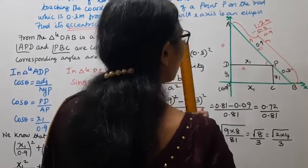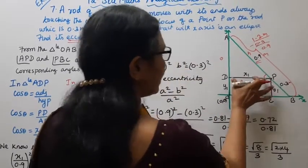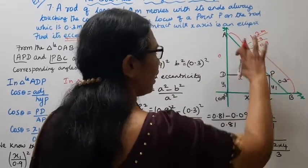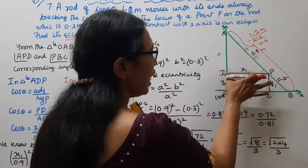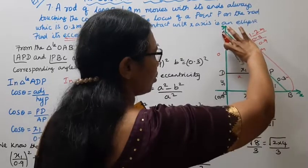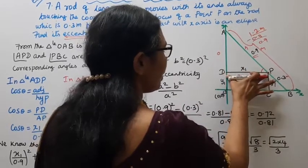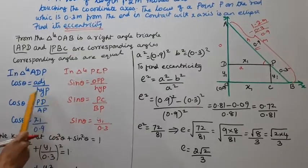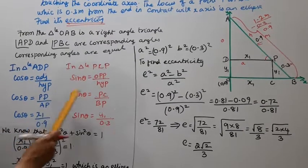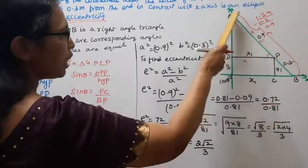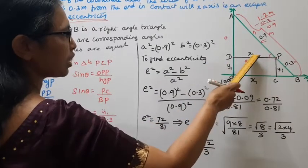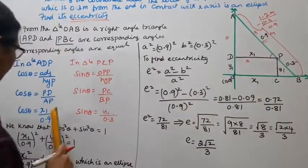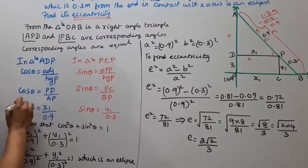Cos theta is adjacent by hypotenuse. Cos theta equals PD by AP. The value is x1 by 0.9.